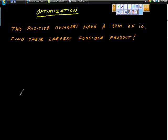So here's an optimization problem out of an AP Calculus AB book, and I thought we'd take a look at it. Two positive numbers have a sum of 10, find their largest possible product.